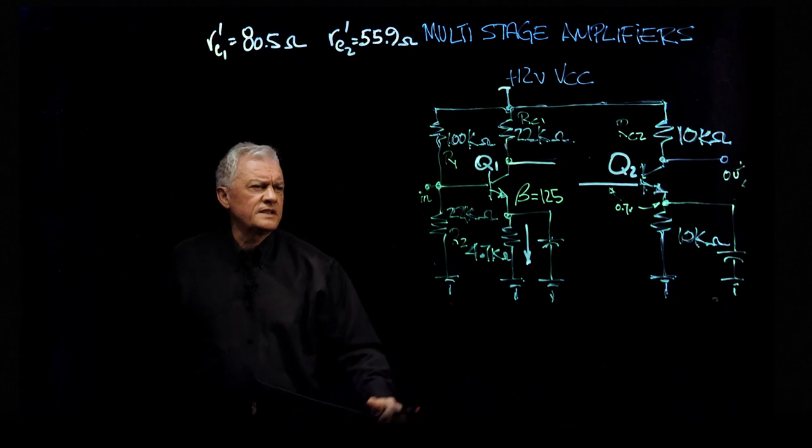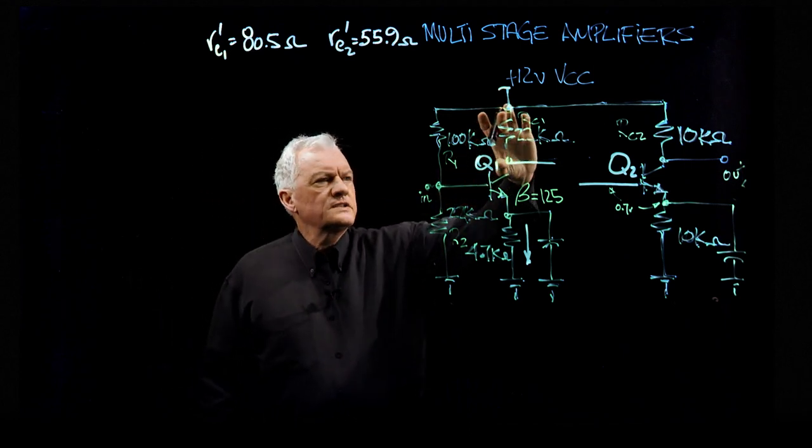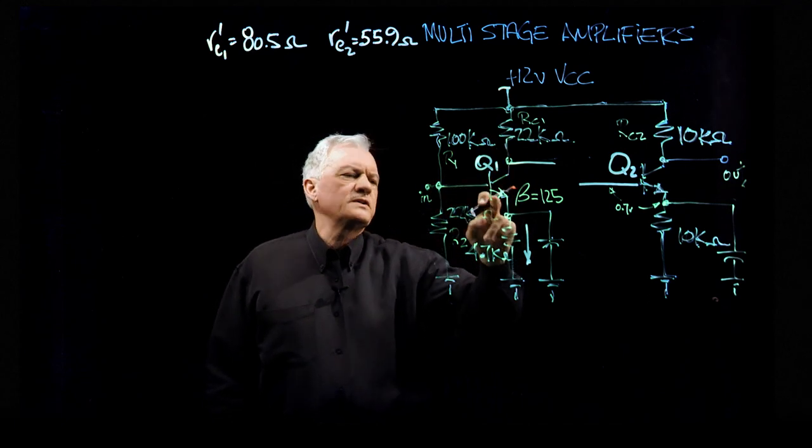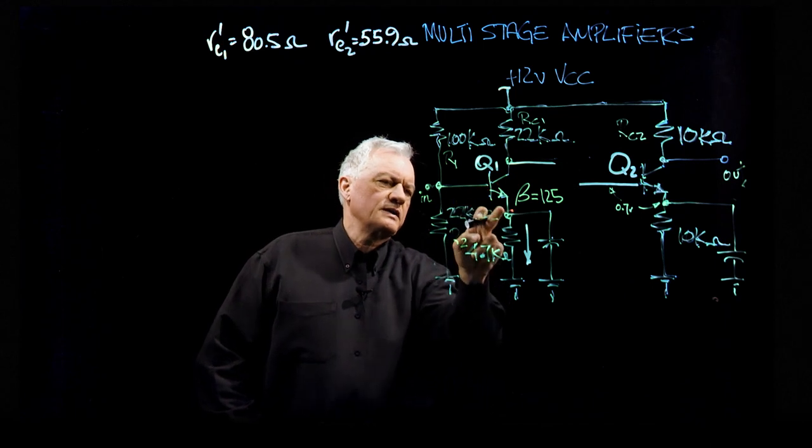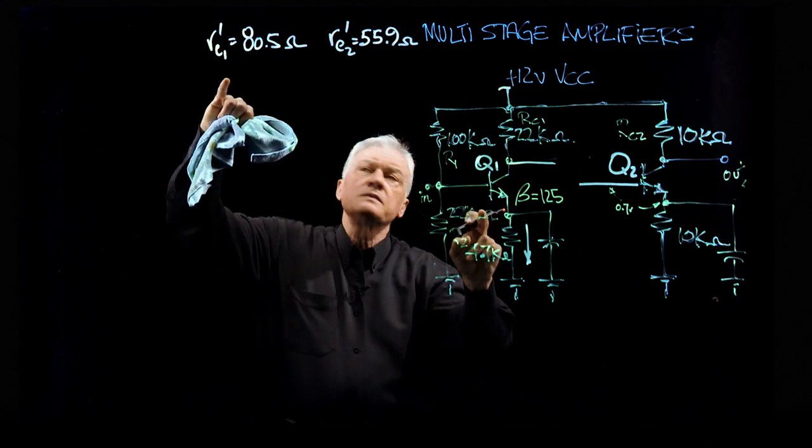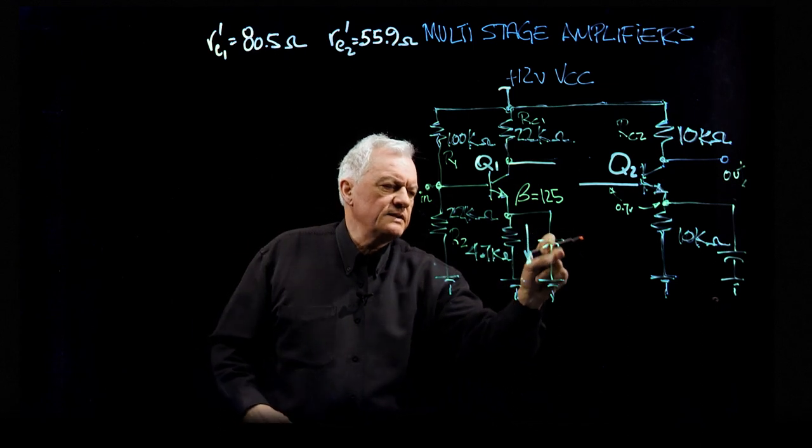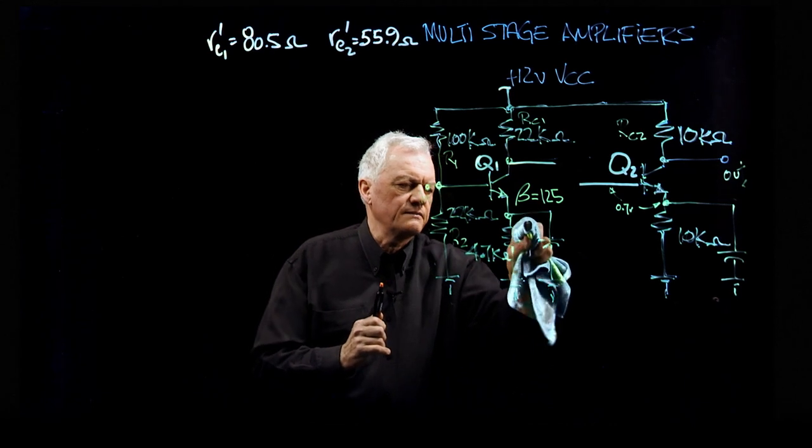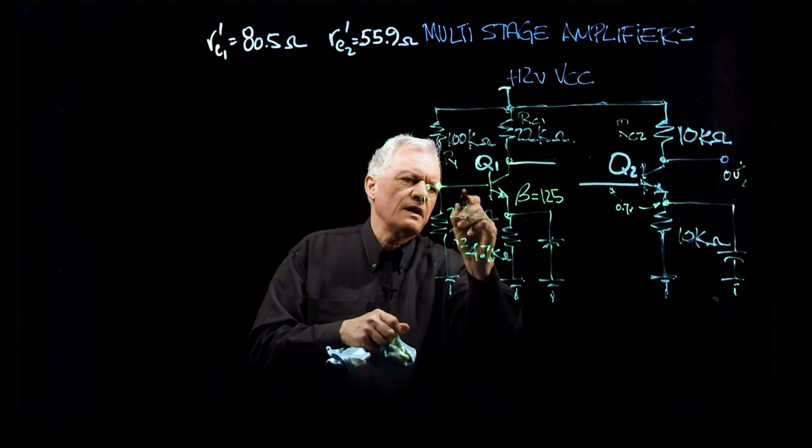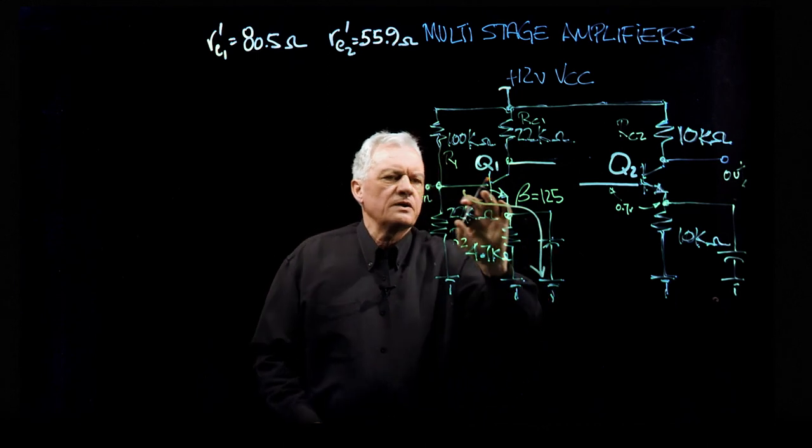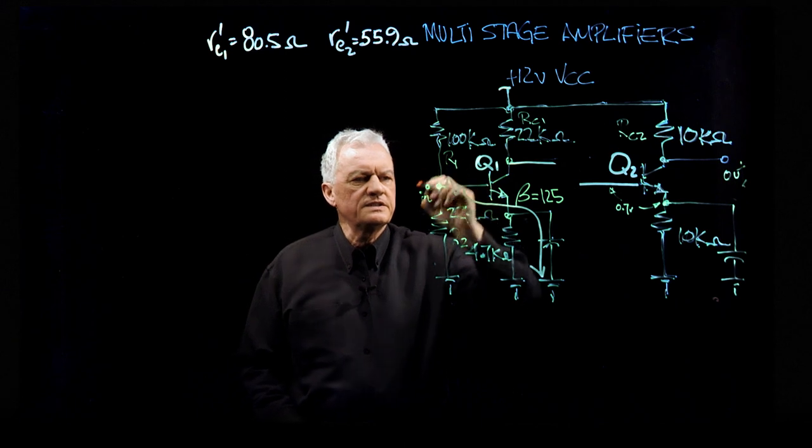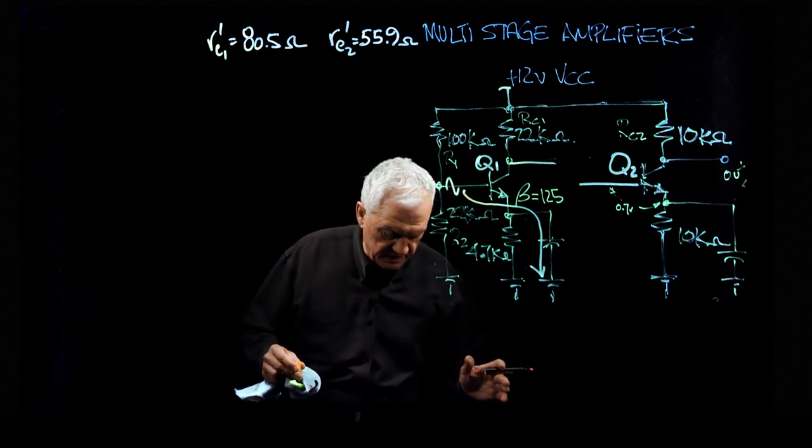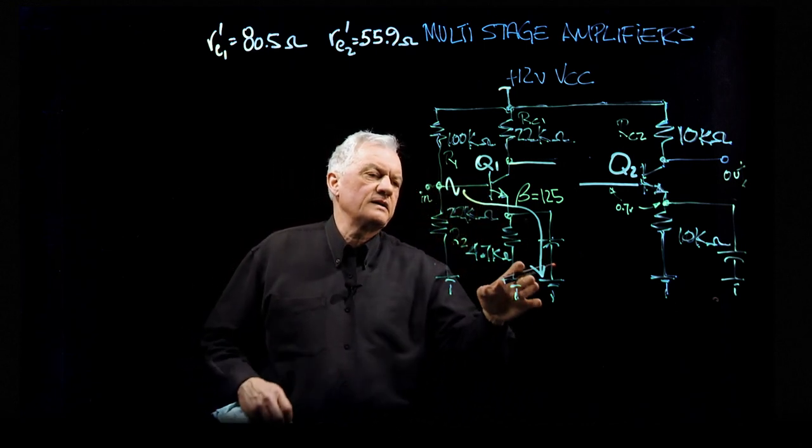We're going to calculate the gain for this amplifier without a load. The gain for stage one is going to be the voltage that's created across here by the signal that comes in versus the voltage that comes in. The voltage that comes in is the voltage that's developed across RE1 prime, but because we have a capacitor here, this resistor is no longer in circuit to the AC signal.